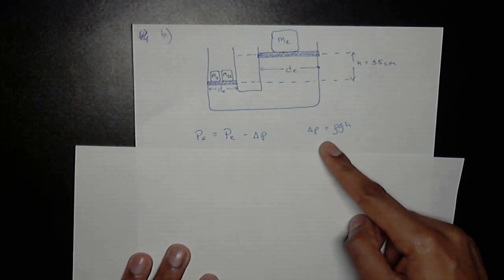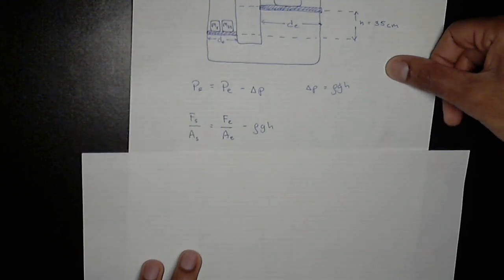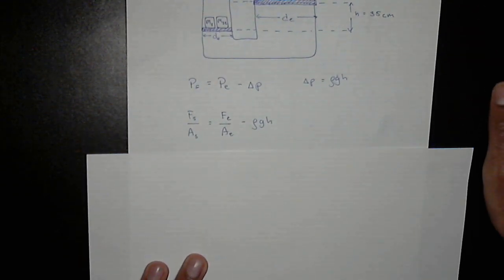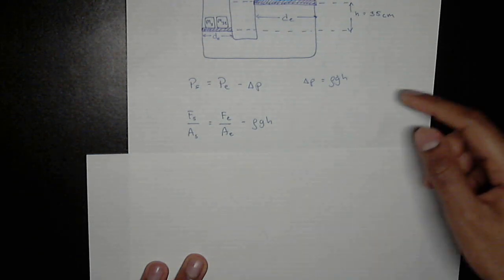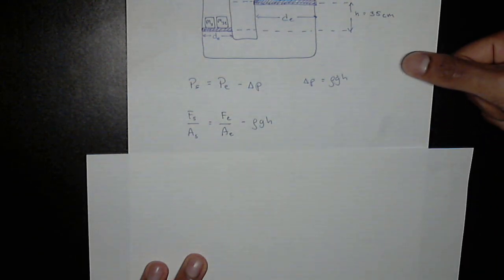So this is our basic equation. To break this down further, we know change in pressure is equal to rho gh, rho being the density of the fluid. We can break it down just like last part. F over A is equal to F over A, but now we have minus rho gh.